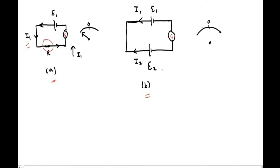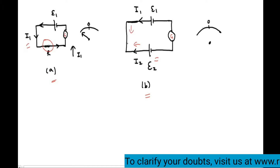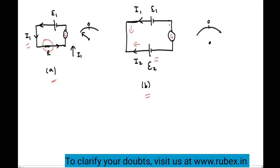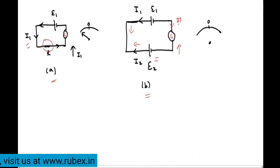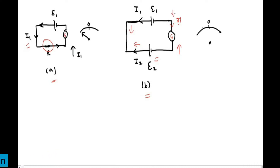In figure B, I have replaced this resistance with some EMF E2. This EMF E2 will also send some current I2 in this direction, and EMF E1 is already sending current I1 in this direction. When I1 and I2 clash, the question is which current will pass through the galvanometer. The answer is simple: whichever current is higher, the resultant current will flow in that direction.